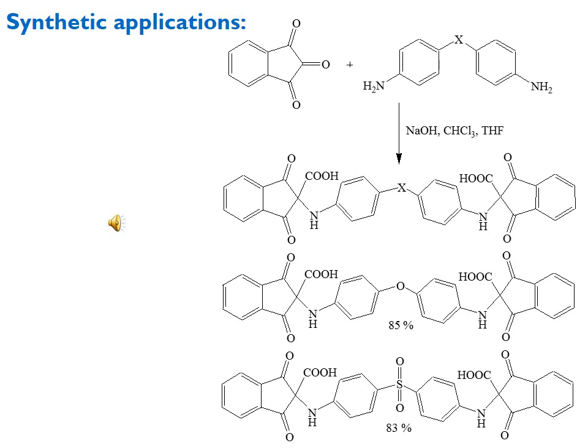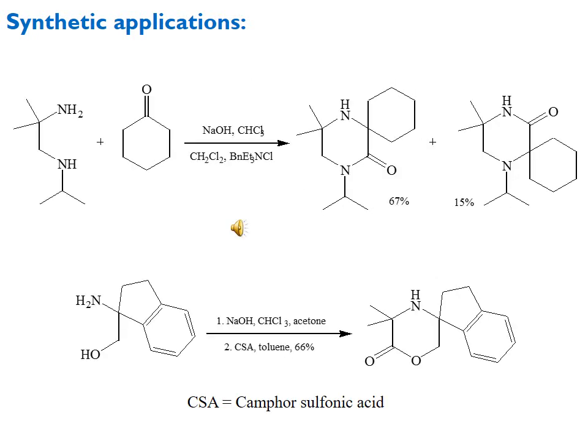Ninhydrin has also been treated with bifunctional anilines — diamines or di-anilines linked through oxygen (ether) or a sulfonyl group. With oxygen/ether linkage, 85% yield is obtained, and with sulfonyl linkage, 83% yield is obtained. These are excellent yields for this reaction.